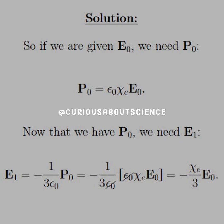Alright, so we see there the epsilon nots cancel, and we're left with chi E over 3 E0.